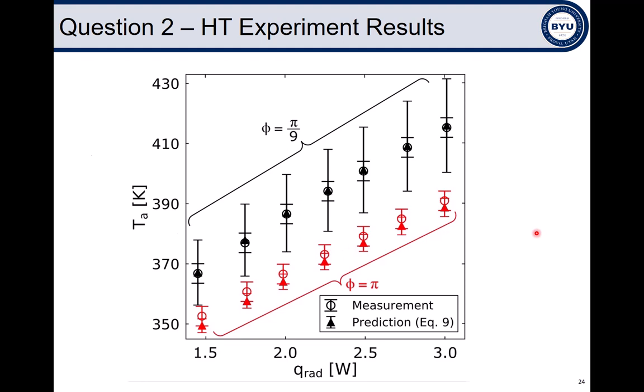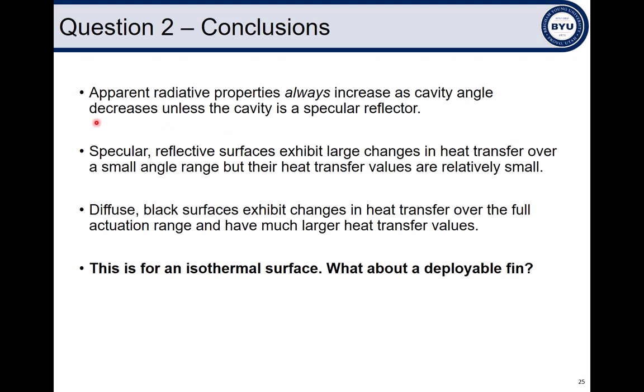This work has been published as three separate journal papers, one each in the International Journal of Heat Mass Transfer, the Journal of Thermophysics and Heat Transfer, and the Journal of Heat Transfer, all of them within the last six months. To summarize our results, apparent radiative properties always increase as cavity angle decreases unless the cavity is a specular reflector and irradiation is collimated. Specular reflective surfaces exhibit large changes in heat transfer over a very small angle range, but their heat transfer values are relatively small. Finally, diffuse black surfaces exhibit changes in heat transfer over the full actuation range and have much larger heat transfer values. But remember, this is all for an isothermal surface. How does this apply once we have a real surface and a real application, something like a deployable radiative fin?